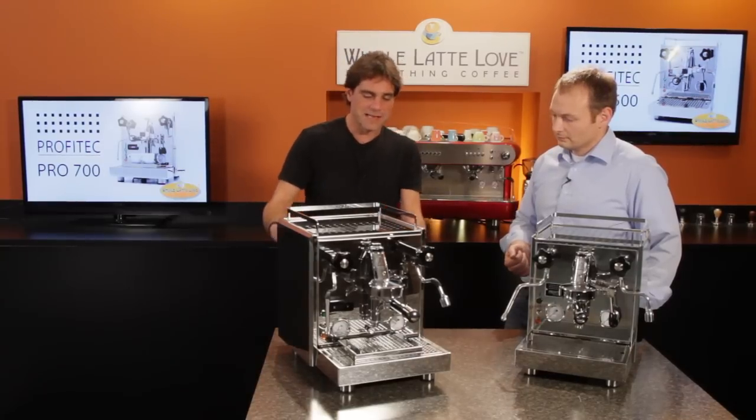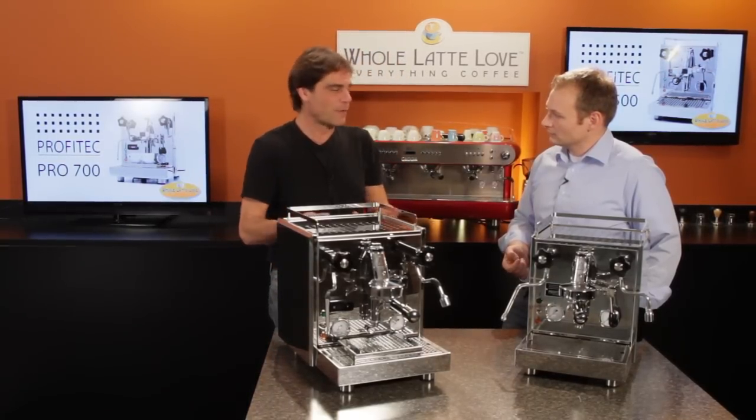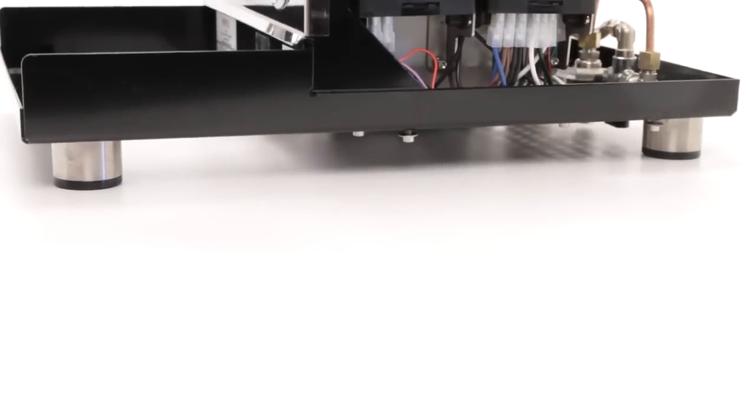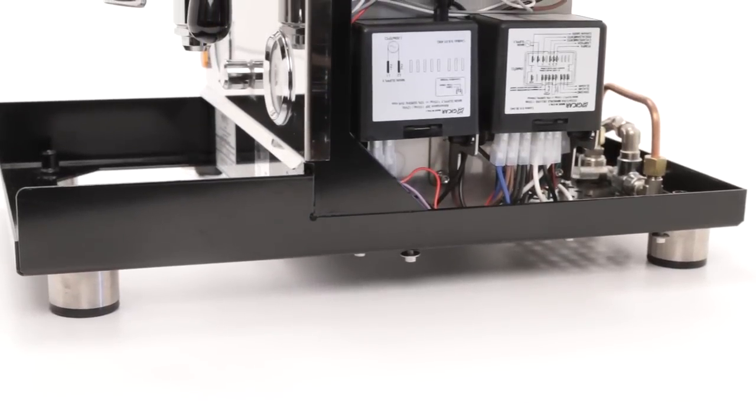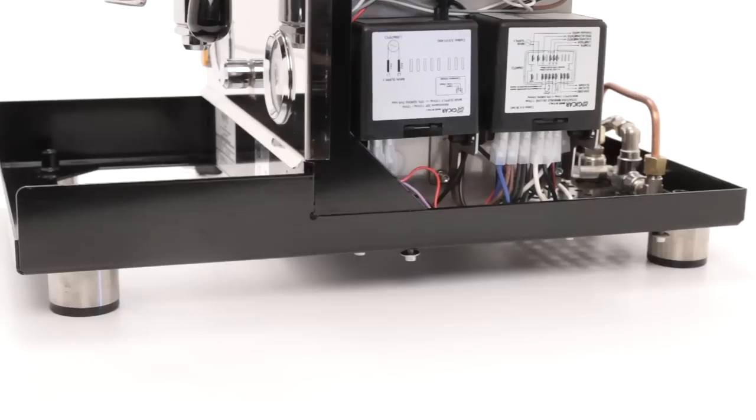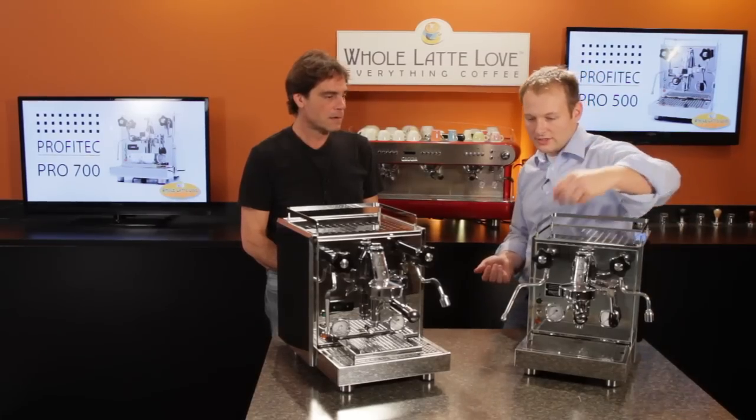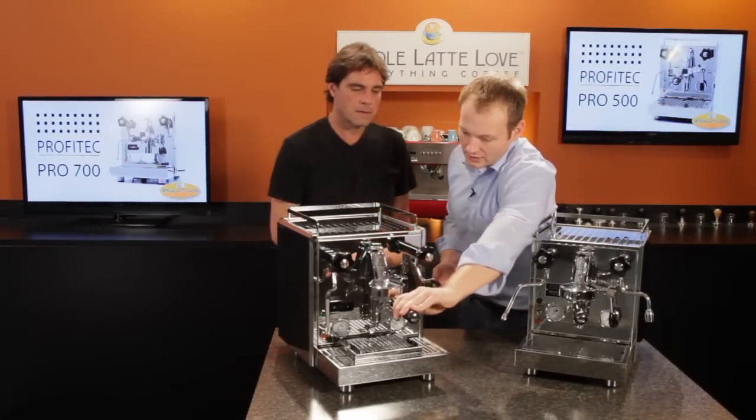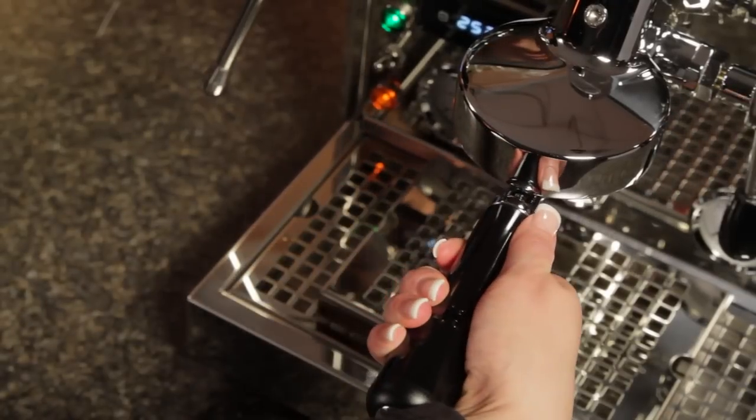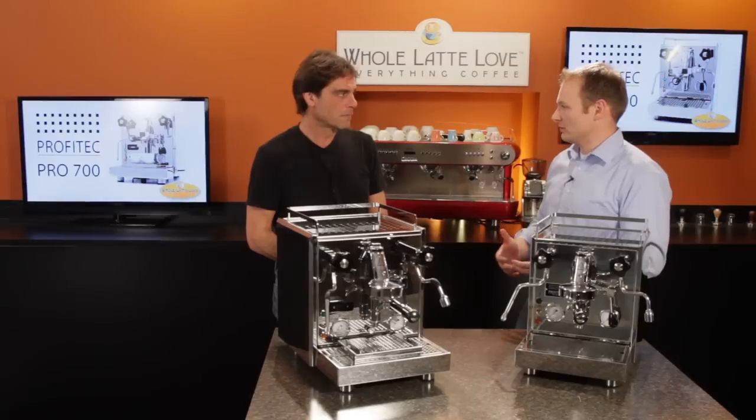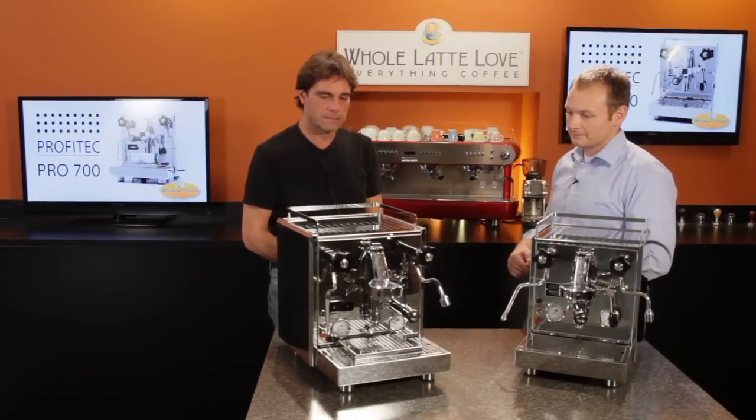And then also inside, another thing that you notice is just from the base. A lot of other manufacturers will weld on that drip tray support. You've got one solid rail front to back on the machine to make the machine solid. Also, what I like is if you install the portafilter, you don't have a lot of movement of the complete machine because that is something which also needs to be built solid to last longer.